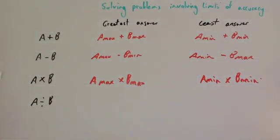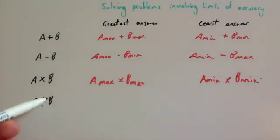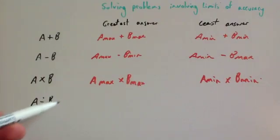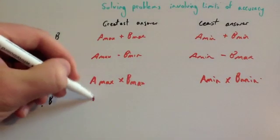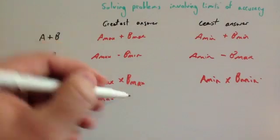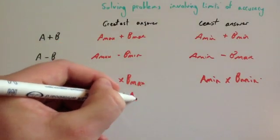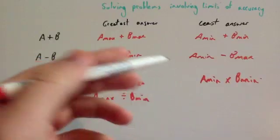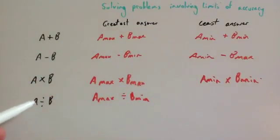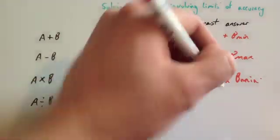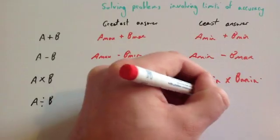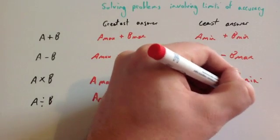For dividing — similar to subtraction. For the biggest answer you'd want to divide the biggest number by the smallest number: the upper bound for a by the lower bound for b. Because then that would fit in more times. So you would do a max divided by b min. And likewise for the smallest answer, you'd want the lower bound for a and the upper bound for b: a min divided by b max.